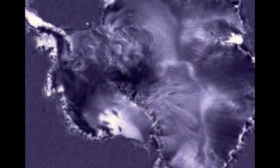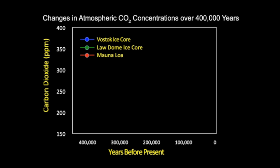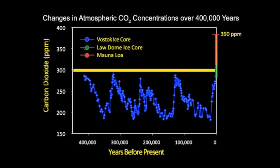Scientists collect ice cores from the Antarctic and other ice fields and measure CO2 concentrations in trapped air bubbles. By analyzing CO2 in air bubbles at different depths, scientists can reconstruct changes that occurred in the Earth's atmosphere over thousands of years. For 400,000 years, CO2 concentrations fluctuated but never exceeded 300 parts per million. However, since the advent of the Industrial Age in the 1800s, concentrations have risen rapidly to reach the current concentration of 390 parts per million.